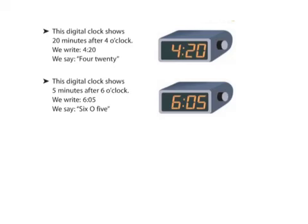On a digital clock, it's not quite as difficult. We would look at this and say it's 4 o'clock, 20 minutes past 4, so 4:20. 6 o'clock, 5 minutes past 6, 6:05.